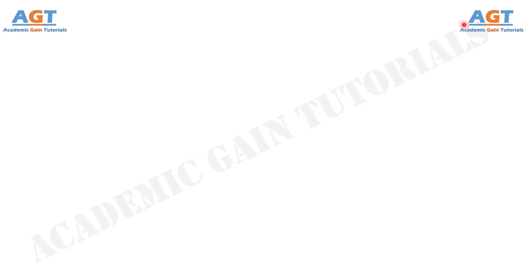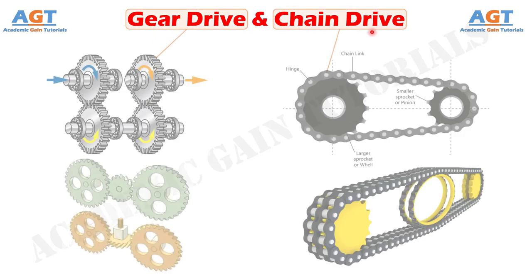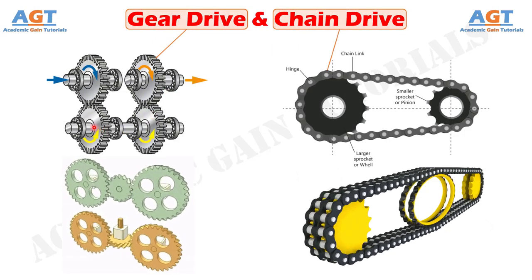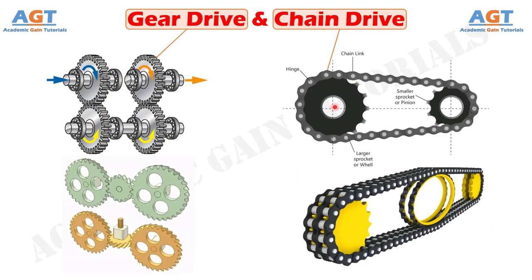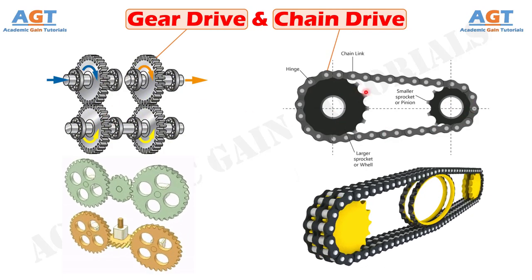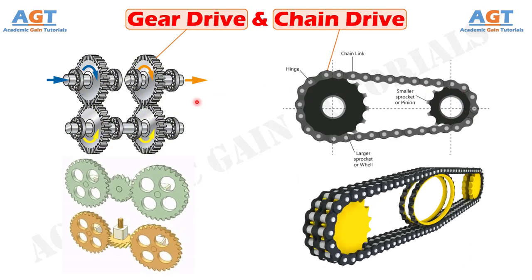Welcome to Academic Game Tutorials. In this video, we will look into the differences between gear drive and chain drive. Mechanical power transmission systems are used to transmit power, motion and torque from a driver shaft — a prime mover such as an electrical motor — to the driven shaft.